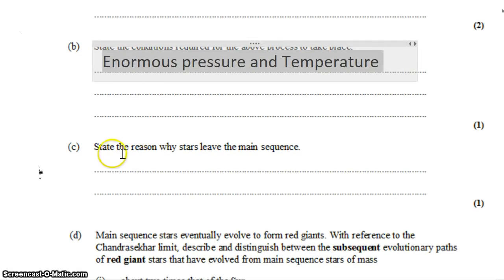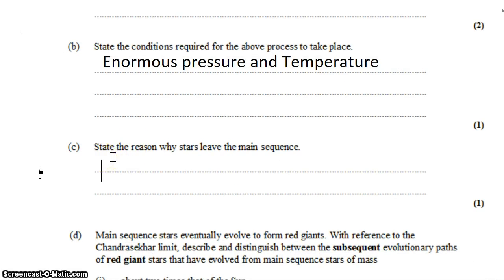State the reason why stars leave the main sequence. Well, they're quite stable in the main sequence. Their gravitational force tries to compress them, but the outward pressure of the energy being released and making its way out through the center of the star from fusion balances that force. So as long as there is energy being produced by fusion in the core, the star remains stable on the main sequence.